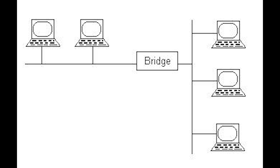If the destination address belongs to the same segment as the source address, the bridge filters the frame, preventing it from reaching the other network where it is not needed. A multi-port bridge connects multiple networks and operates transparently to decide on a frame-by-frame basis whether to forward traffic, just like a simple bridge.